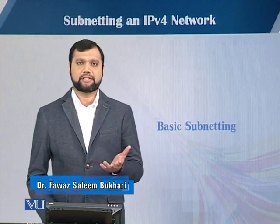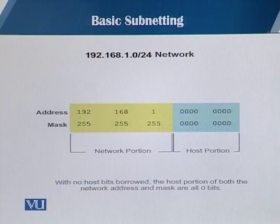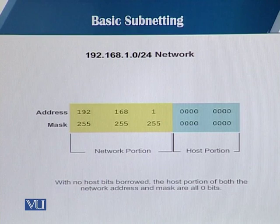Now let's talk about subnetting in an IPv4 network. This is going to be a basic subnetting module. As you can see on the slide, there is a particular network 192.168.1.0 with 24 bits as the network part, which leaves us with 8 bits for the host part. If we are not going to borrow any bits from the host part, then the host portion of both the network address and the mask are all going to be zero bits.